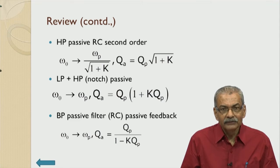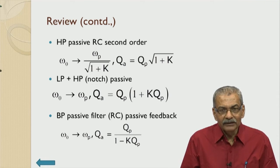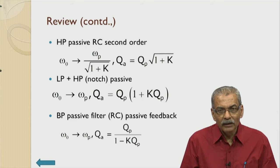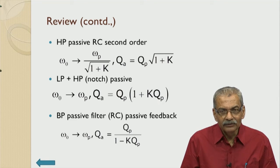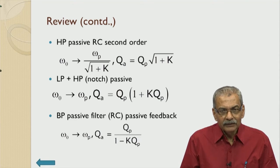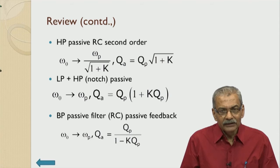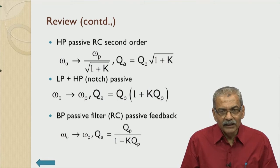Starting with the high pass passive RC second order, the same negative feedback situation resulted in omega naught equal to omega p, which is 1 over RC divided by square root of 1 plus K. Q active remained Q passive into square root of 1 plus K. Both low pass plus high pass — resulting in a notch output — used in the embedded system with negative feedback using inverting amplifier of gain K, resulted in omega naught remaining equal to 1 over RC and Q active becoming Q passive into 1 plus K.